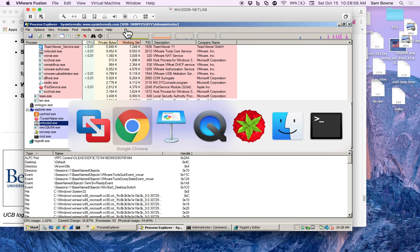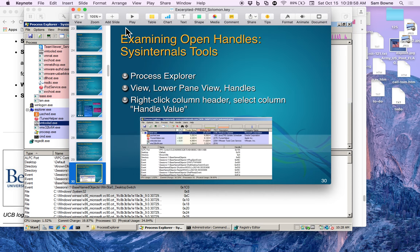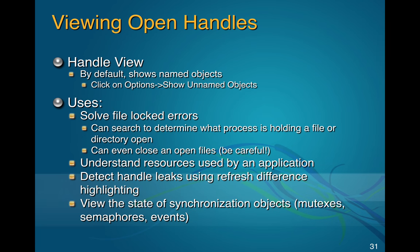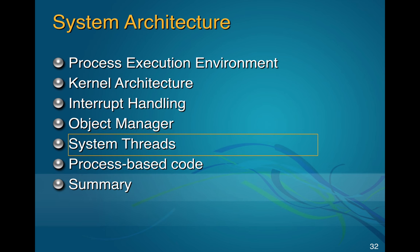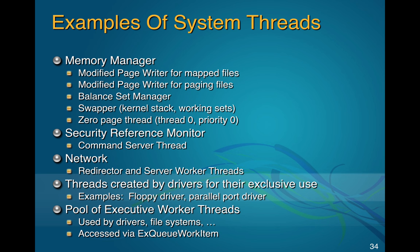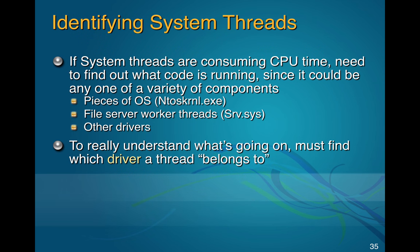That shows open handles, which you can use to unlock files that are locked. Then there are system threads — small pieces of a process that run independently. You can have a print job running while doing other things. There's also the memory manager, reference monitor, and network threads — many different things running as individual threads.